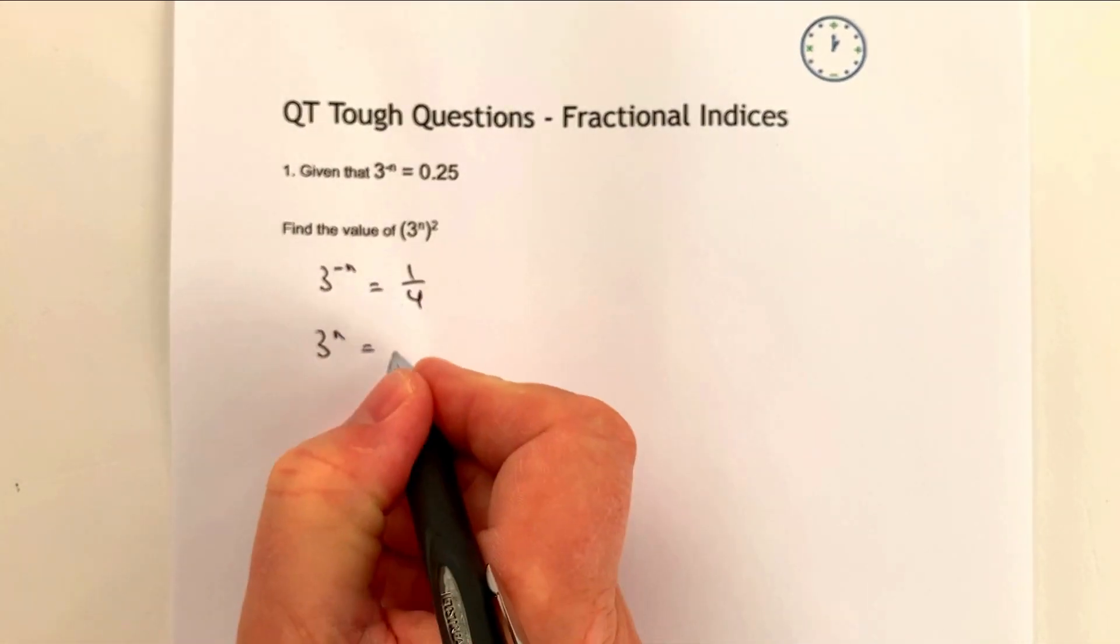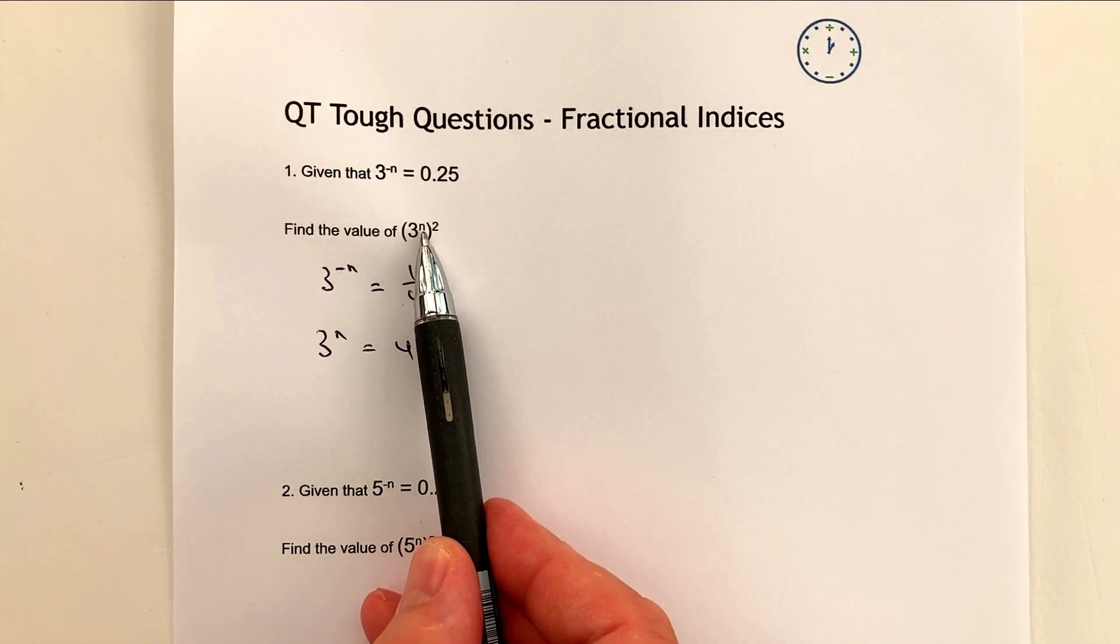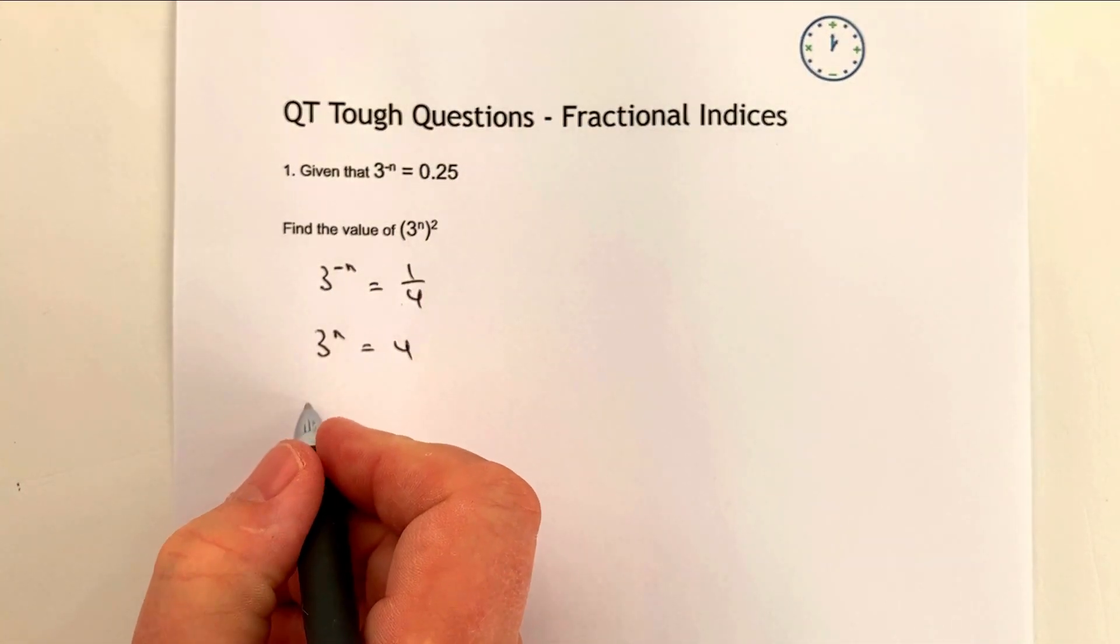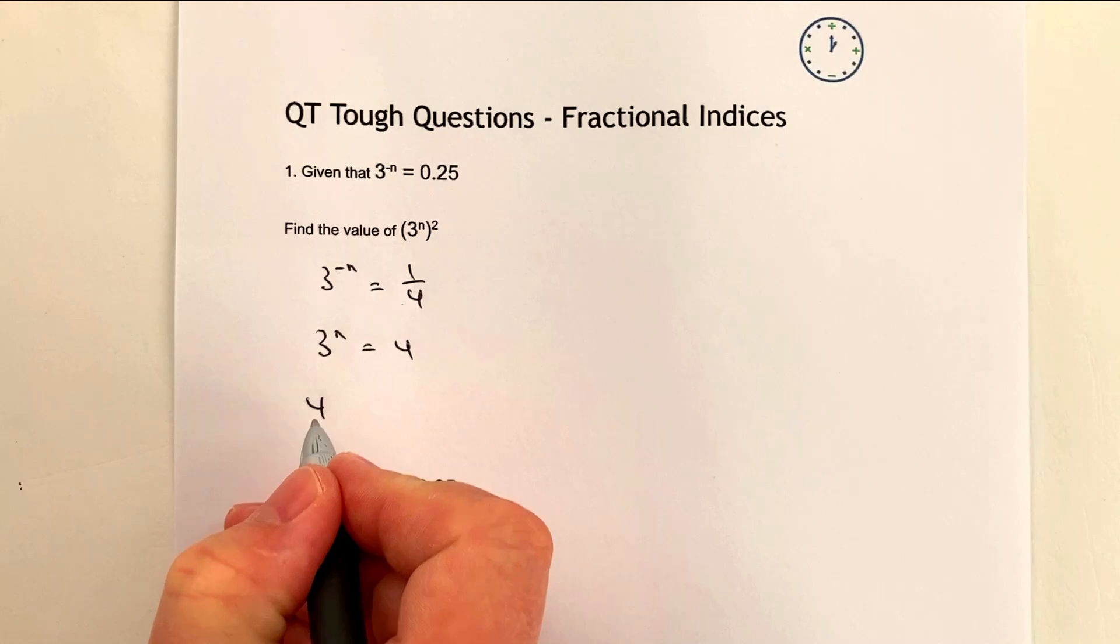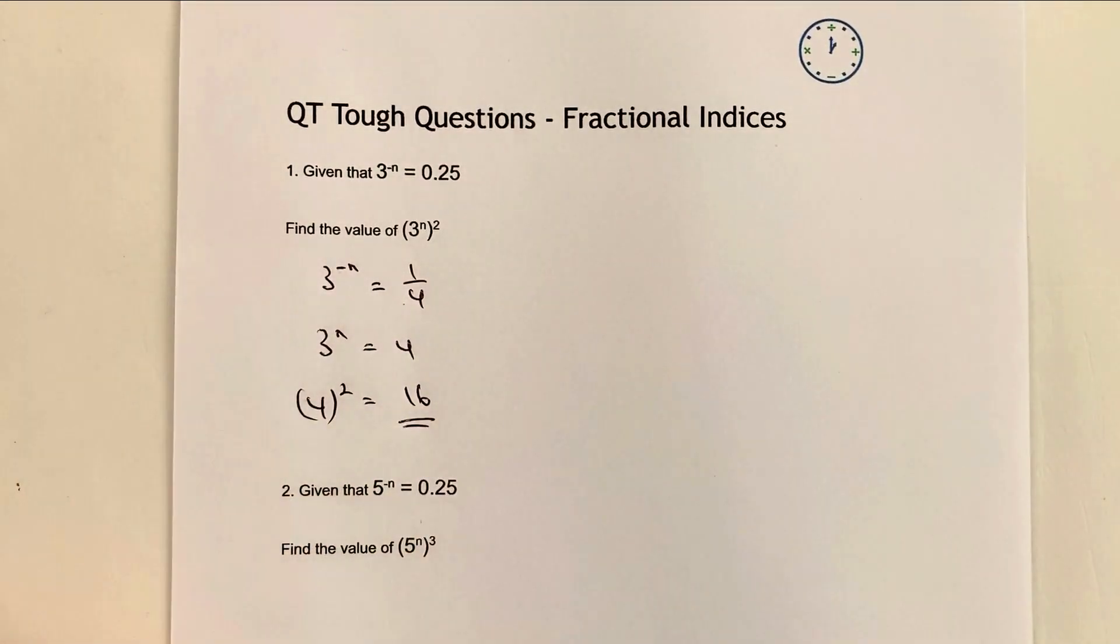And then really it's a case of taking this value of 4 and putting it straight into the expression. So actually the value of (3^n)^2 is going to be 4 squared, which is going to be 16, and that's the answer to the question.